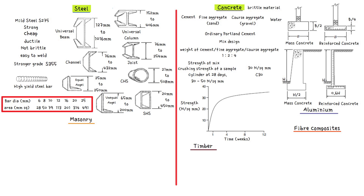Now let's move on to timber. Timber can be divided into two main types: hardwoods and softwoods. Hardwoods originate from broad-leaved trees such as oak, ash and mahogany, whereas softwoods originate from coniferous trees such as spruce, pine and douglas fir. The terms hardwood and softwood are loosely accurate but can be misleading. Balsa, as used by model aeroplane makers, is classed as a hardwood but is actually very soft. Pitch pine softwood, on the other hand, is quite hard. Softwoods grow faster than hardwoods and as a result are less expensive to purchase. For this reason, the majority of structures are made of softwood.